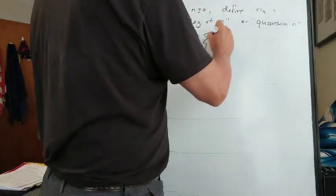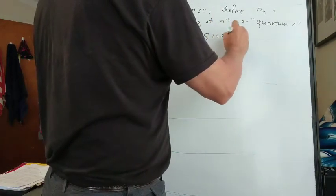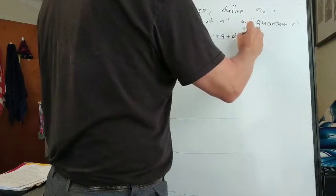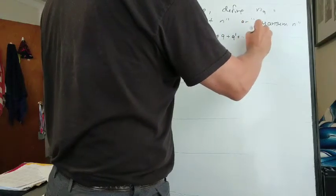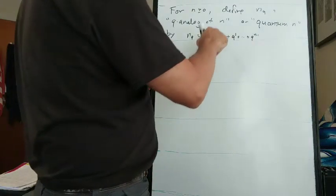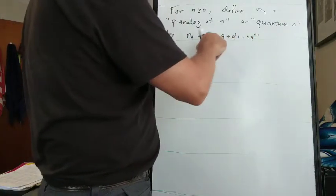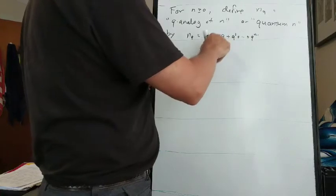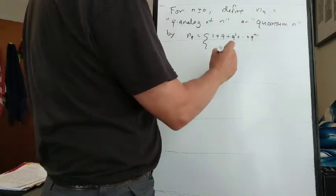It's a polynomial in q that has the first n minus 1 powers of q, starting from 0. So q to the 0th plus q to the 1st, etc., up to q to the n minus 1.